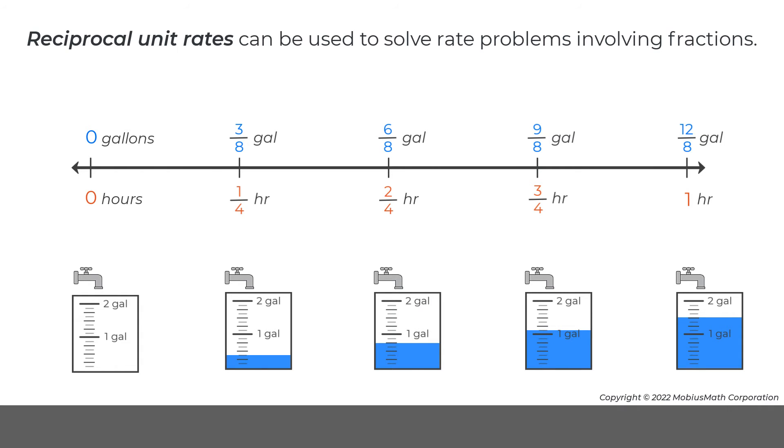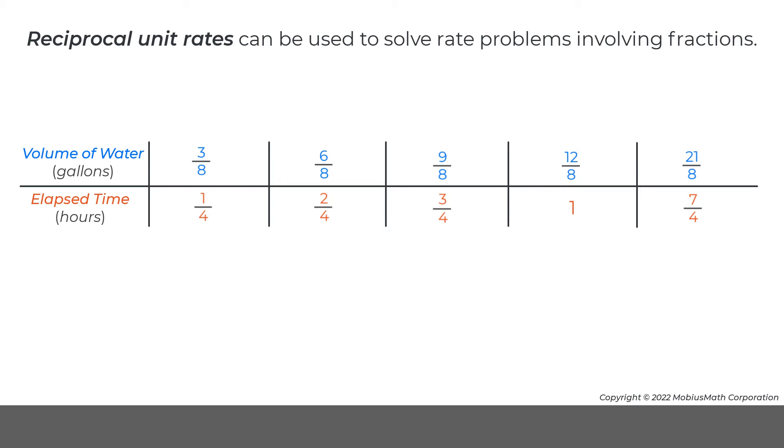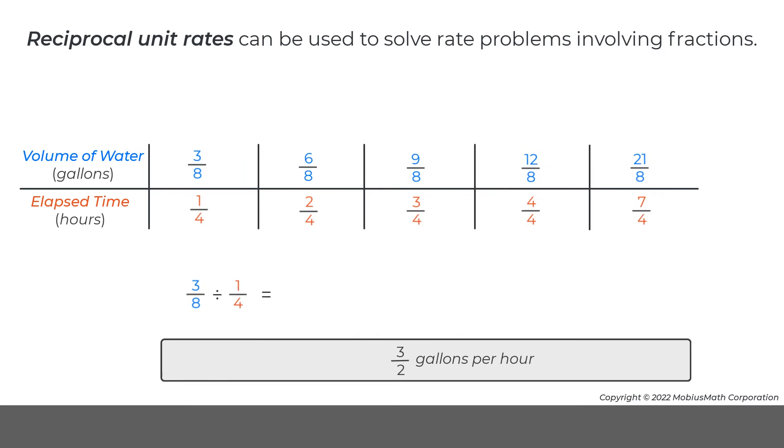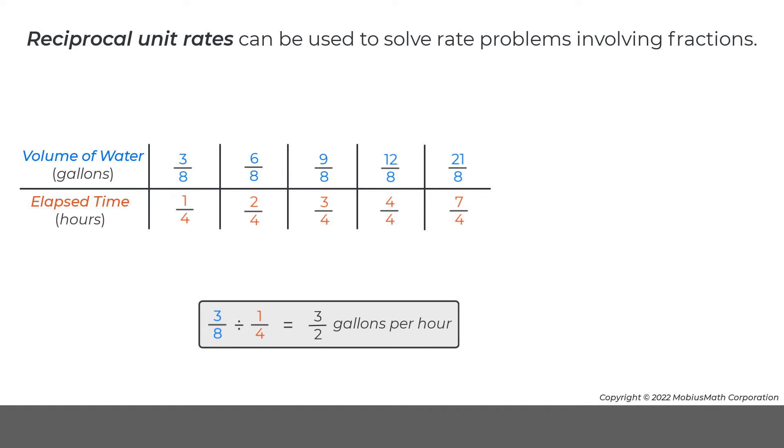Equivalent rates were also represented in a ratio table. Dividing the value for gallons by the value for hours generated a unit rate of 3 halves of a gallon per hour.